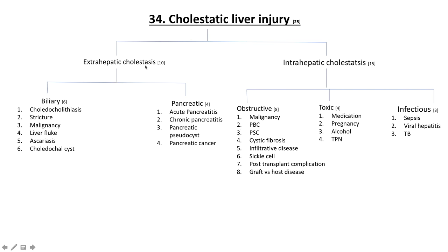Ten causes of extra-hepatic cholestasis — which shows biliary duct dilation on ultrasound — split into biliary versus pancreatic. Biliary causes: choledocholithiasis (gallstones trapped in the bile duct), strictures in the bile ducts seen on ERCP, malignancy, cholangiocarcinoma, liver fluke, and ascariasis. For extra-hepatic cholestasis due to pancreatic involvement: acute and chronic pancreatitis, pancreatic sclerosis, and pancreatic cancer. The main causes of acute pancreatitis include ethanol and gallstones, but also trauma, steroids, mumps, anti-nuclear factor, scorpion venom, post-ERCP, drugs, and hypertriglyceridemia.